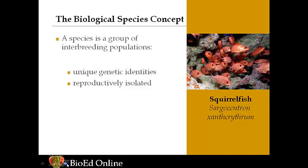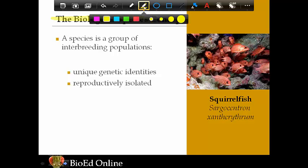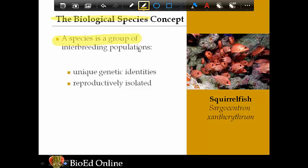So what is a species? A species is a group of organisms of interbreeding populations. A population is a group of organisms of the same type, and what we're relying on for a species is that they can breed with each other. That population has a unique genetic identity — meaning it's genetically different than other populations in the area — and it's reproductively isolated, which means it's only reproducing within its own species, not going outside the species to reproduce.